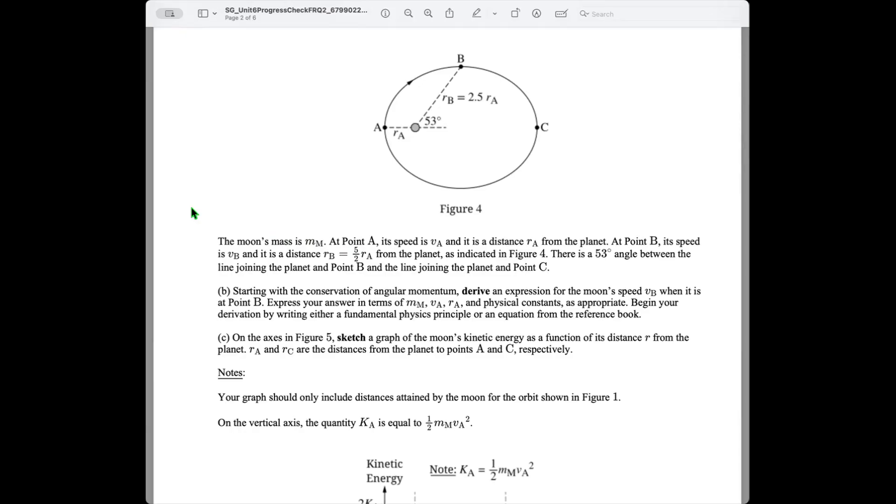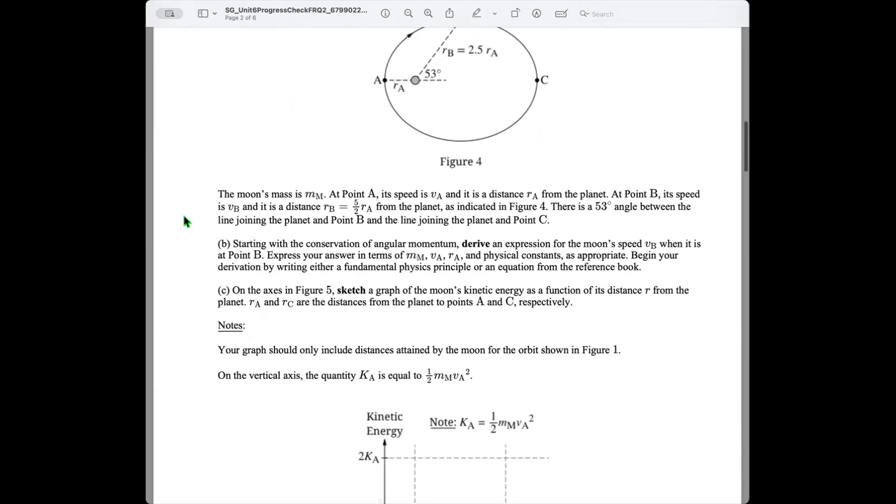Setting up part B. The moon's mass is M sub M. At point A, its speed is VA and it is a distance RA from the planet. At point B, its speed is VB and it is a distance RB equals five halves RA from the planet, as indicated in figure four. There is a 53 degree angle between the line joining the planet and point B and the line joining the planet and point C. So right here, there's a 53 degree angle is what they're saying.